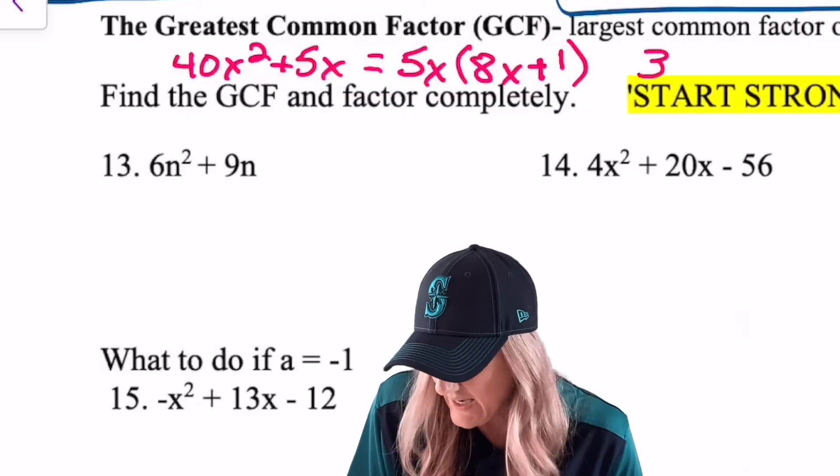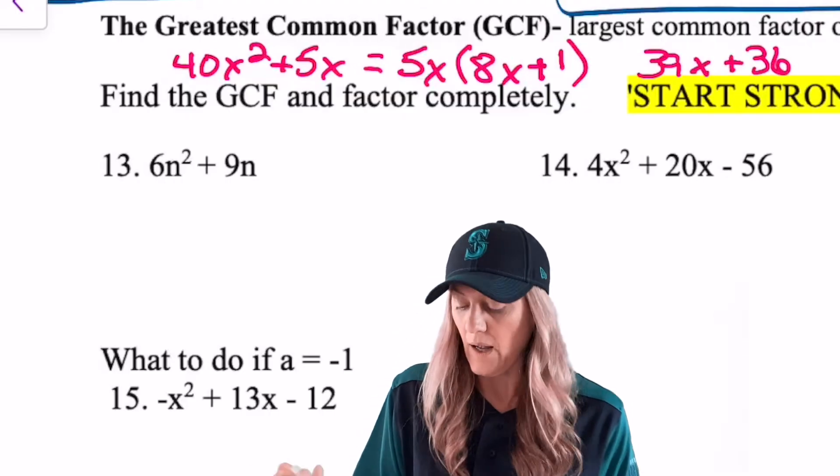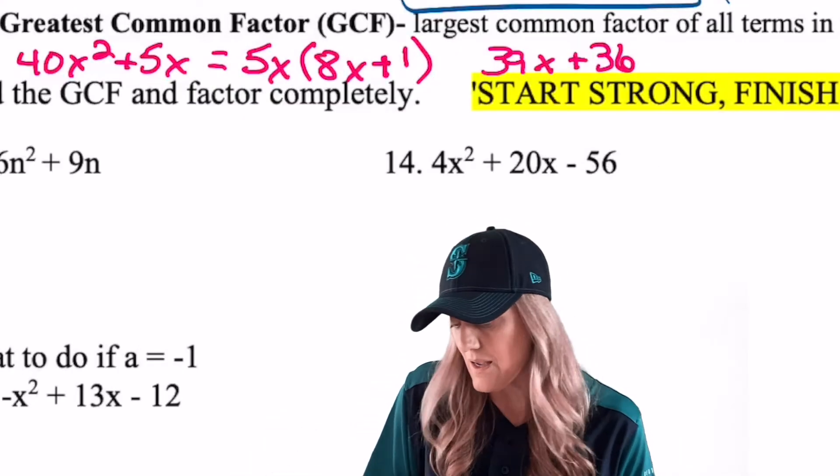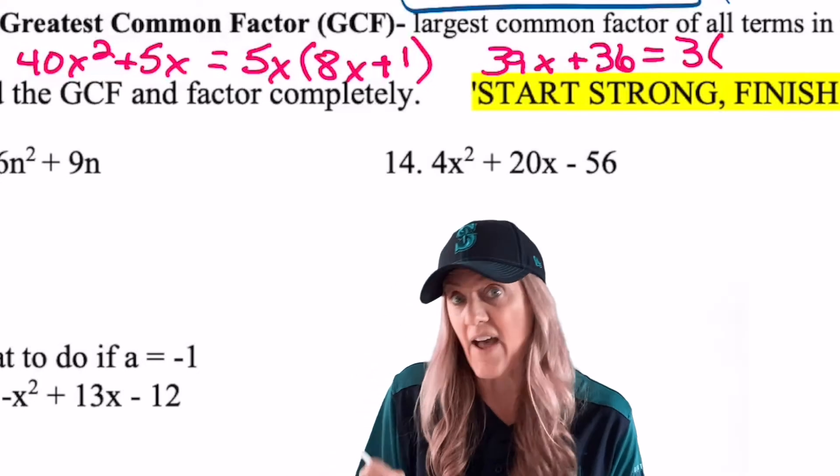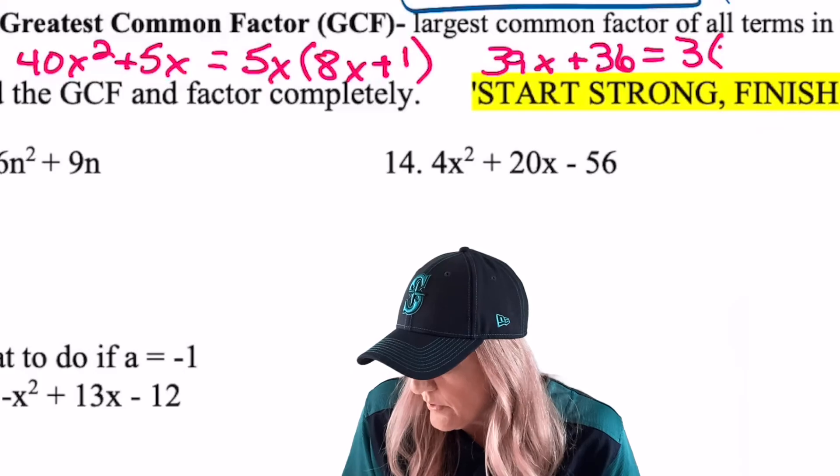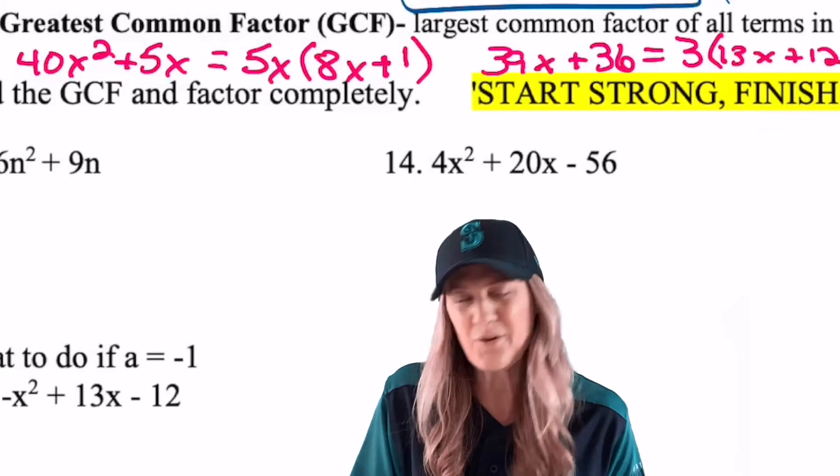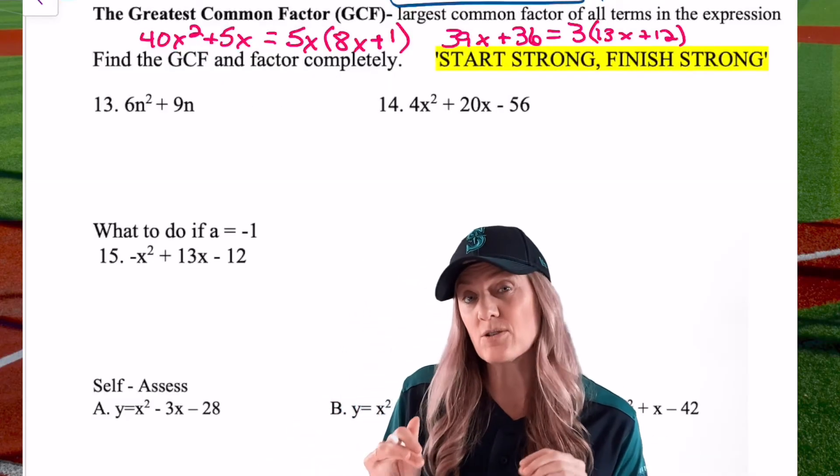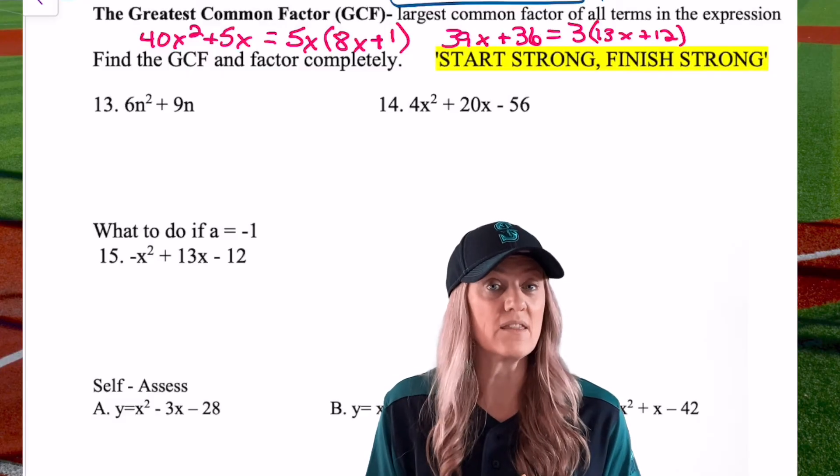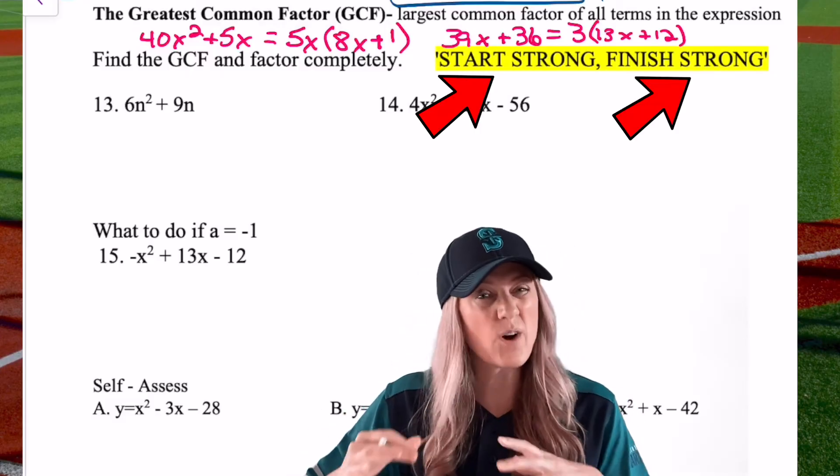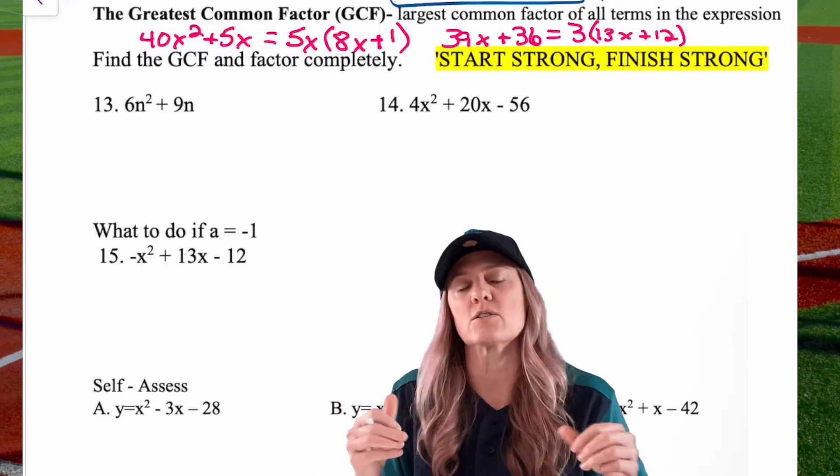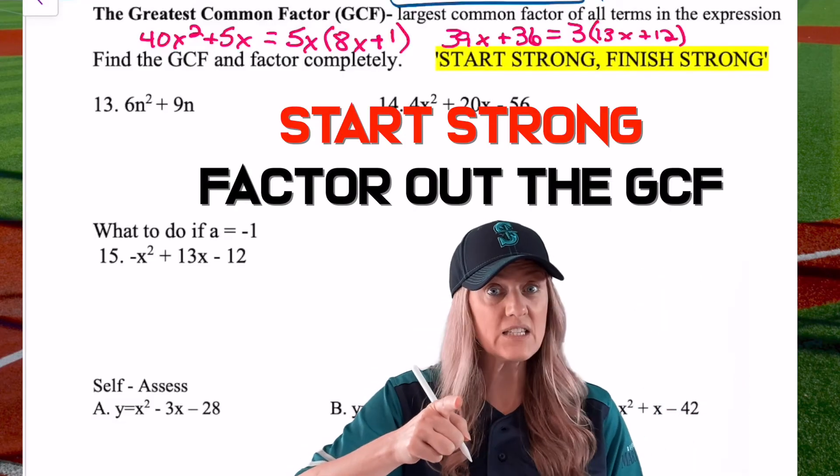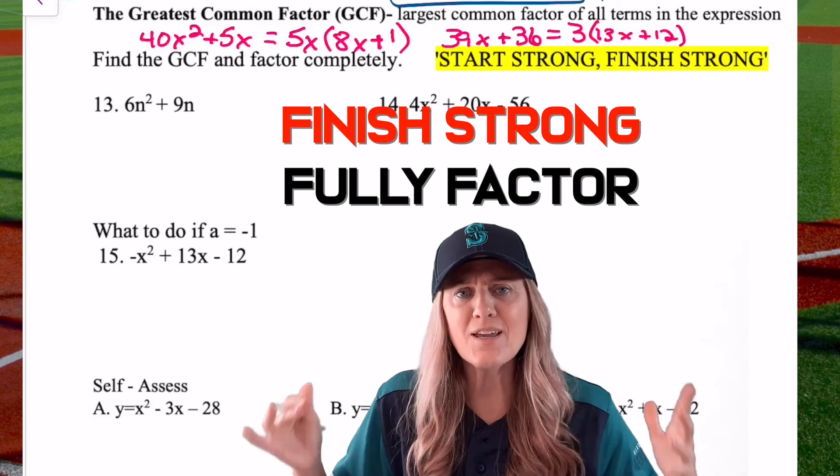Another one. What if we had 39 X plus 36? Well, the only common factor there is a 3. Both 39 and 36 are divisible by 3. So I can rewrite this expression as 3, factor out the 3 times 13 X plus 12. Do you remember that now? Let's look at our next thing. We're going to find the GCF and factor completely. This is a great time to start with. Start strong, finish strong. Because trust me, we're moving on to stuff that's going to be way bigger. So if we get these ideas in our head now, it's going to be so much easier.